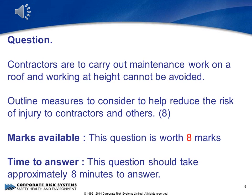The following question is taken from Element 1, Workplace Hazards and Risk Control, and is covered in section 1.5. Contractors are to carry out maintenance work on a roof and working at height cannot be avoided. Outline measures to consider to help reduce the risk of injury to contractors and others. You have 8 minutes to answer this question and your time starts now.